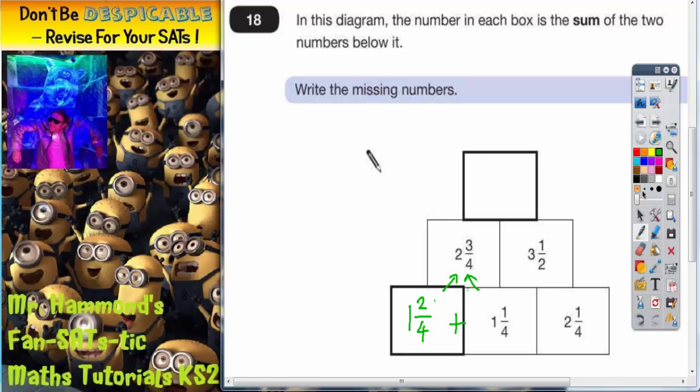Remember though, one and two quarters you could also write as one and a half, because two quarters is the same as a half. So let's change that to one and a half.